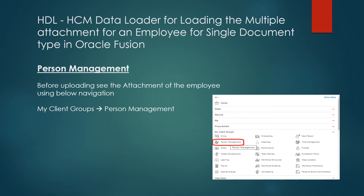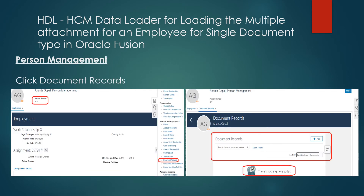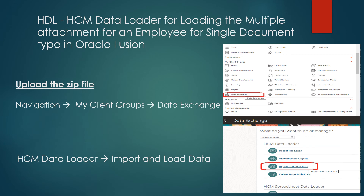Now before uploading, let's make sure we check whether there is an existing attachment for this employee or not. This is the navigation that should be used to query for an employee. The navigation is: go to My Client Groups, then Person Management, query for an employee, and on the side menu you can see Document Records — click on that. Now you can see there are no documents attached currently.